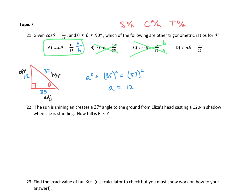Cotangent is the reciprocal trig function for tangent. Because tangent is opposite over adjacent, cotangent will be adjacent over opposite. Is the adjacent side 35? Yes, it is. Is the opposite side 12? Yes. So this one is also correct. We had two correct answers on this one — A and D. Maybe they should have said 'select all that apply' versus making it look like a multiple choice question.